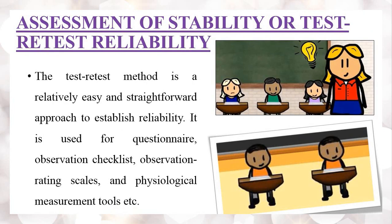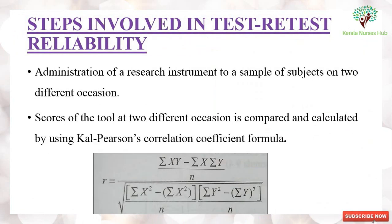Assessment of stability or test-retest reliability: the test-retest method is a relatively easy and straightforward approach to establish reliability. It is used for questionnaires, observation checklists, observation rating scales, and other physiological measurements.